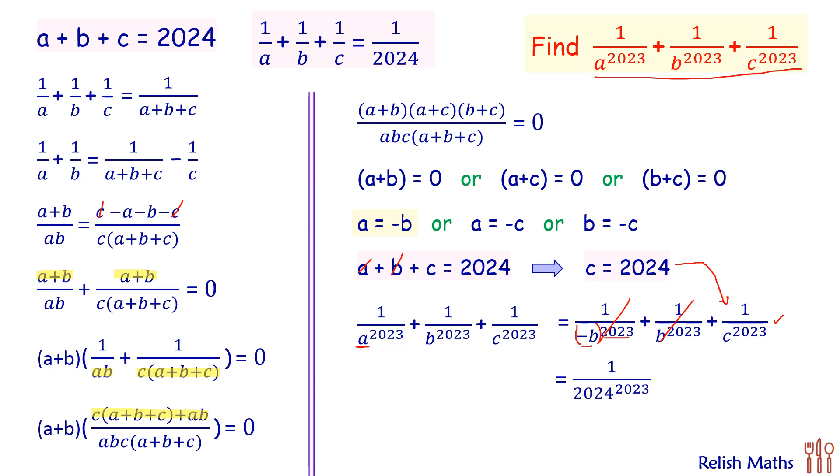So we'll put the value of c here to get our value as 1 over 2024 raised to power 2023, and that's our final answer. I hope you enjoyed the solution. I will see you in next video. Till then, tata bye bye.